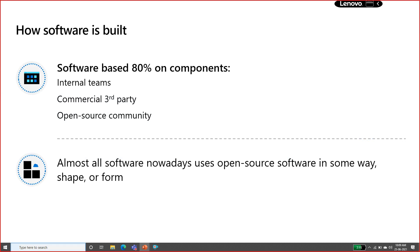Most of the time when we do development, we use around 80 percent of components that are either internally developed by the team, commercial software requiring a subscription, or open source components we download and use. Those components can be downloaded from NuGet, npm, or other open sources such as GitHub.